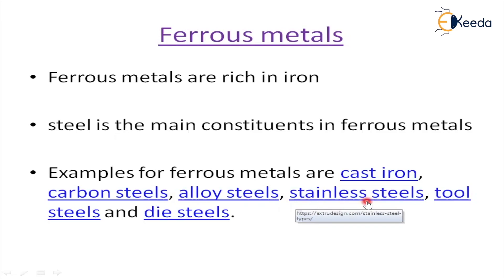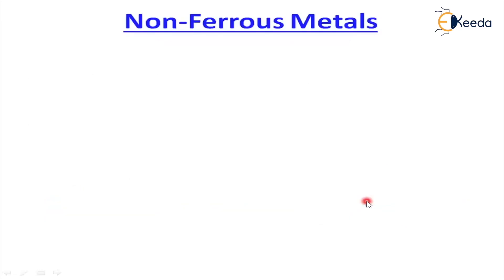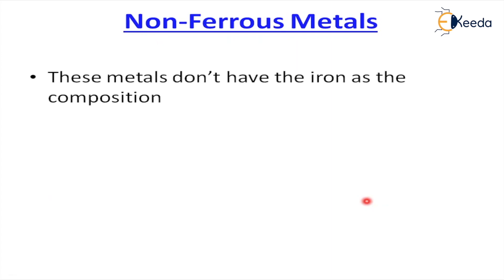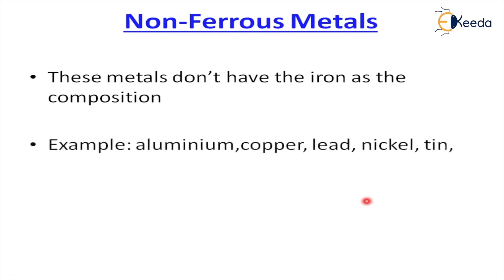Non-ferrous metals don't have iron as the main composition — that is the main point to understand non-ferrous metals. Examples include aluminium, copper, lead, nickel, tin, titanium, and zinc. These non-ferrous metals are very useful in the market. Aluminium is the most abundant non-ferrous metal available in the earth's crust.